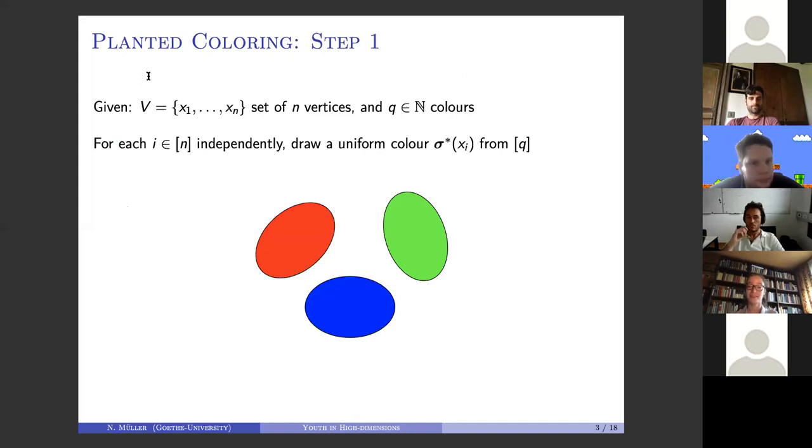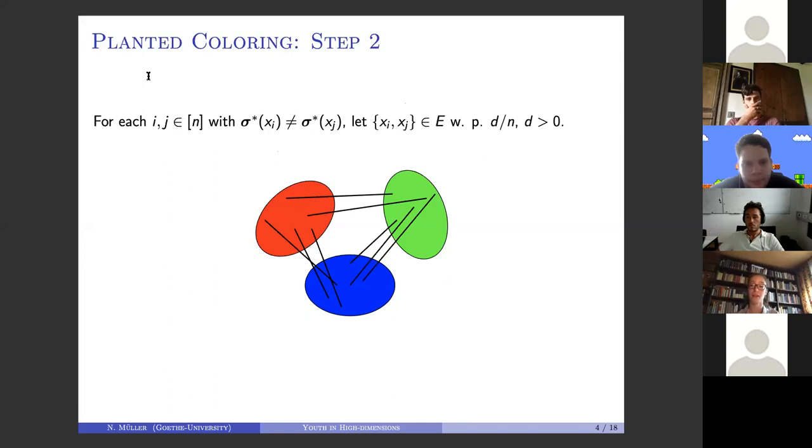In the next step, you generate edges between vertices of different colors. For each pair of vertices which have been assigned different colors in the previous step, you include an edge into the edge set with probability d over n, and it does not depend on the particular colors that you consider.